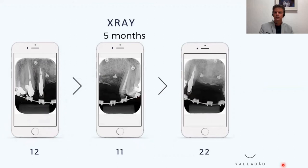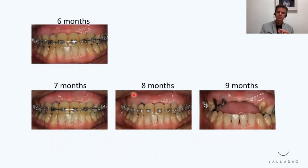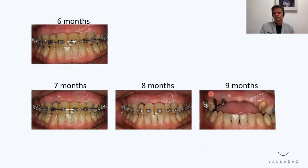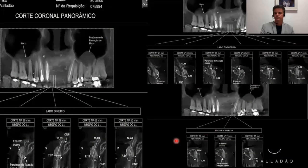We continued with the clinical evaluation of the patient. There was no exposure, no signs of infection. However, between the seven and eight months, up to the nine months, there was an apparent loss of volume, visible in the bottom images. Comparing the fifth month and the nine months, we seemed to be losing a practical part of the graft. This was also visible in the tomography image — part of the graft was lost, especially between the central, left central incisor, and the lateral incisor.